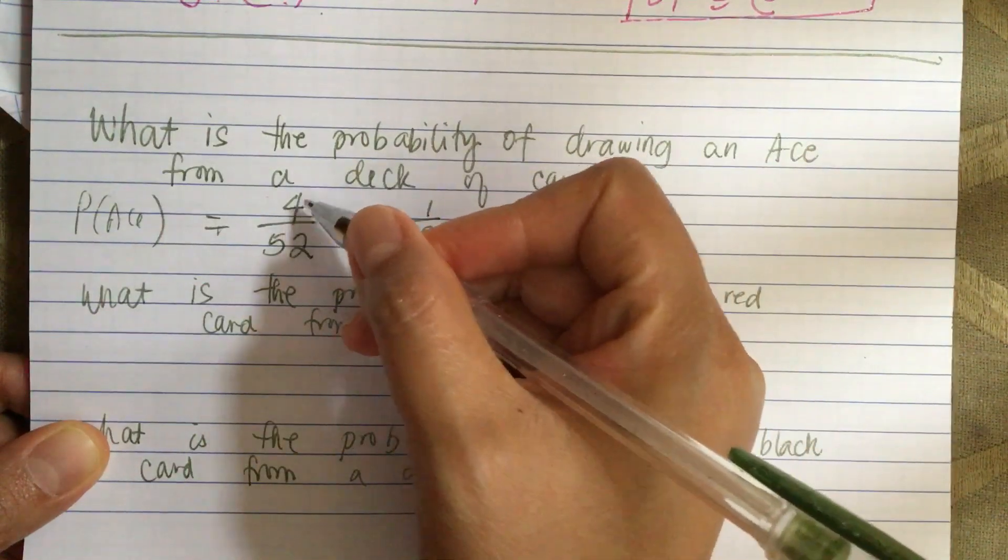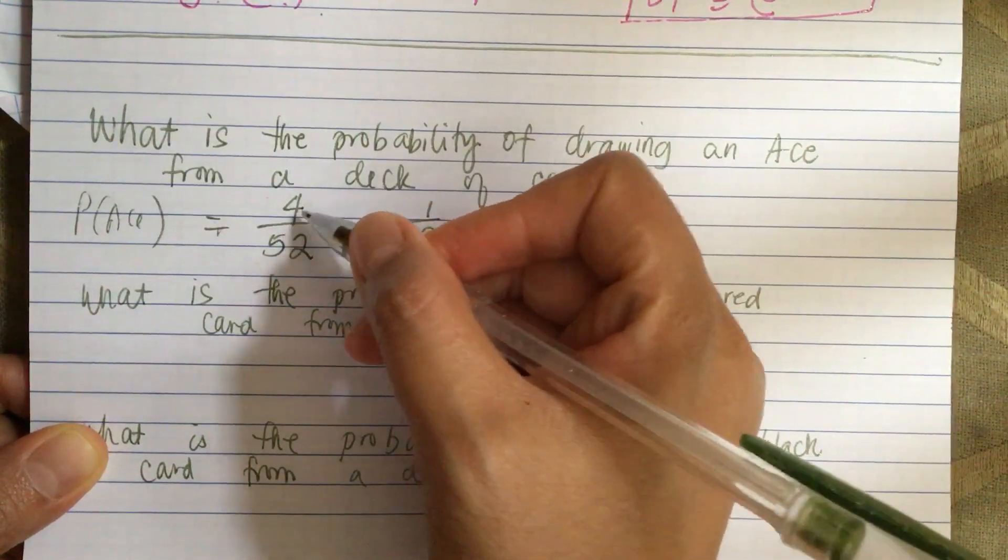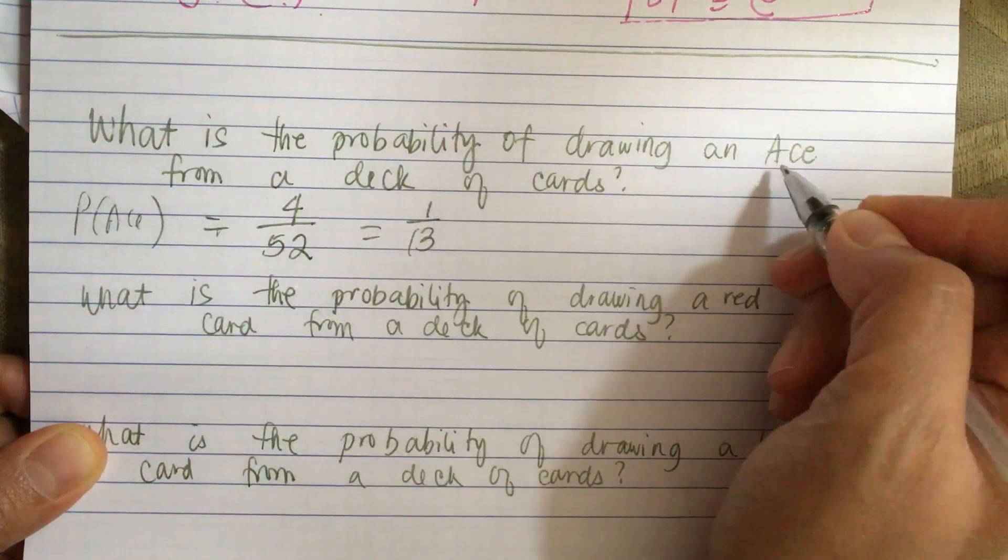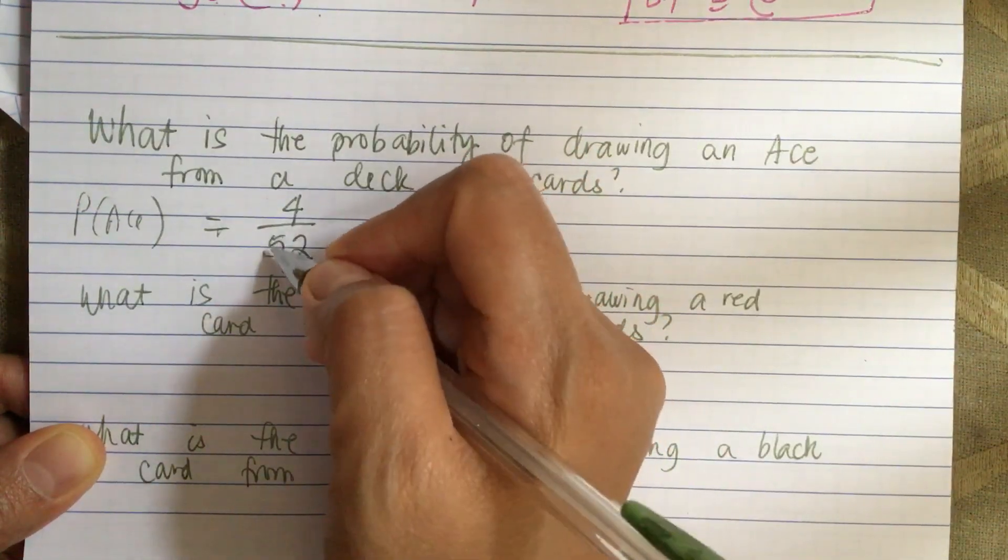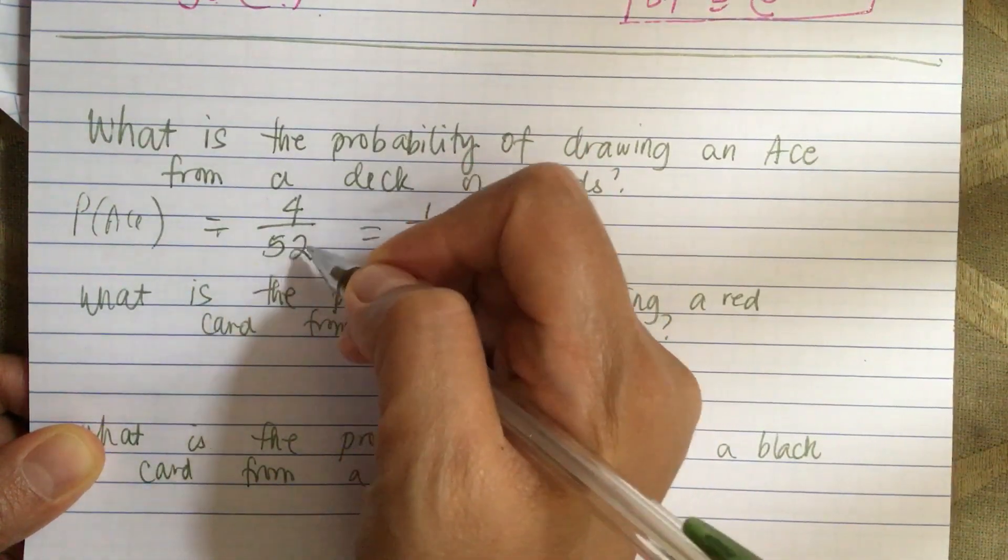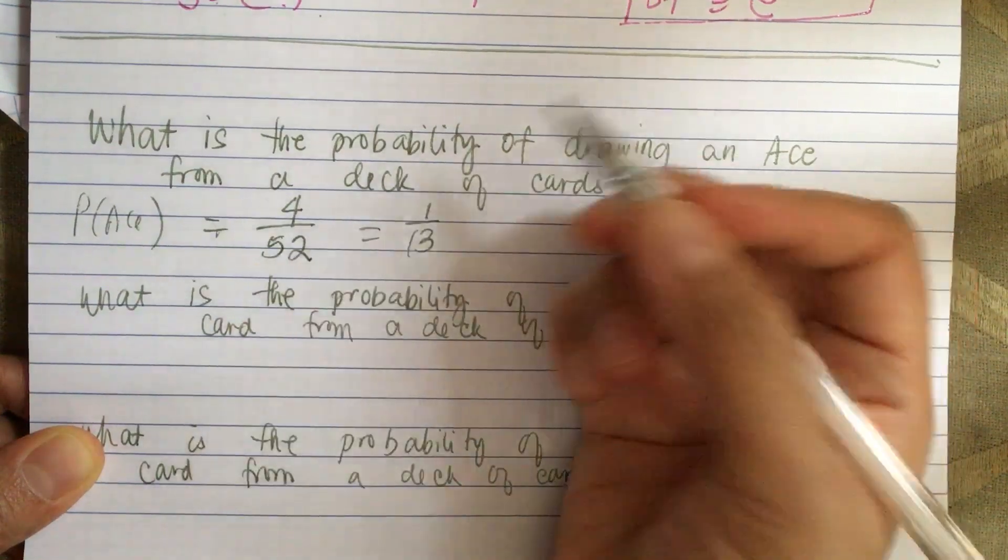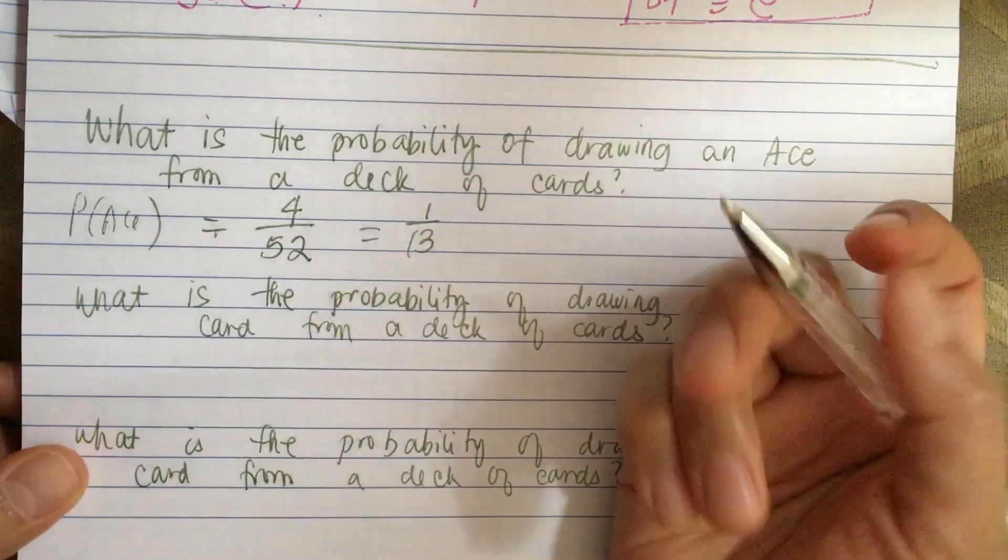The ace of spades, ace of hearts, ace of diamonds, and ace of clubs - there are four aces. The total cards are 52, so this is equal to 1/13.